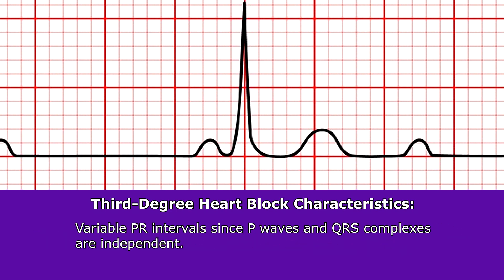In addition, you can have variable PR intervals because the P waves and the QRS complexes are independent of each other.